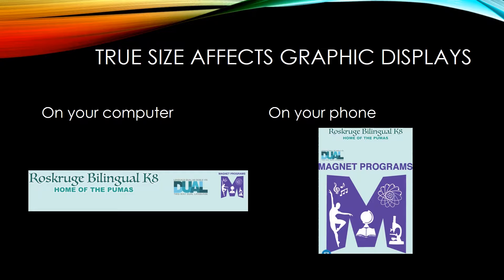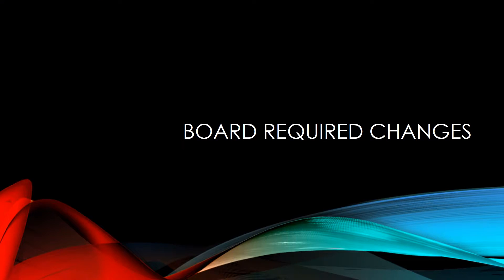In this example, both logos are occupying the same percentage of the module. However, because one is only 125 pixels wide and the other is 1200 pixels wide, unusual results happen at the smallest screen size. This can be avoided by sizing items that occupy similar space with similar starting sizes.